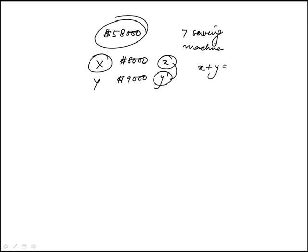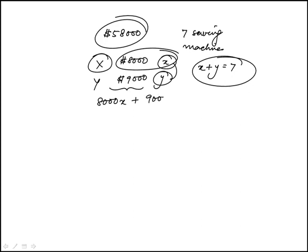We know that X plus Y has to add up to seven. The cost of X machines would be 8,000 times X. Same thing for machine Y, 9,000 times Y. And this total has to add up to $58,000.